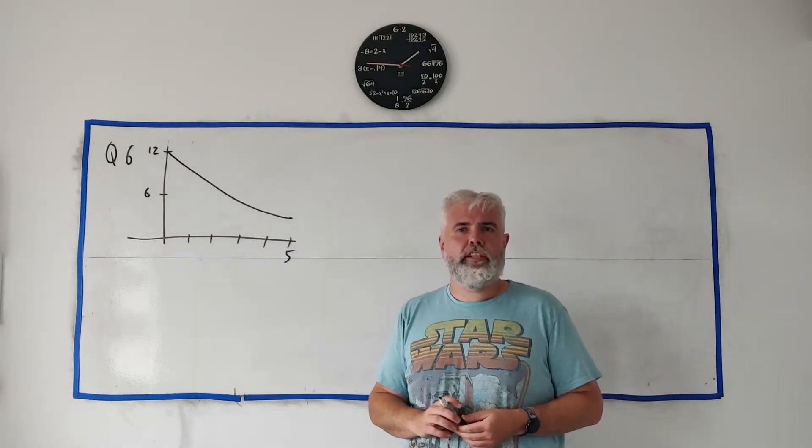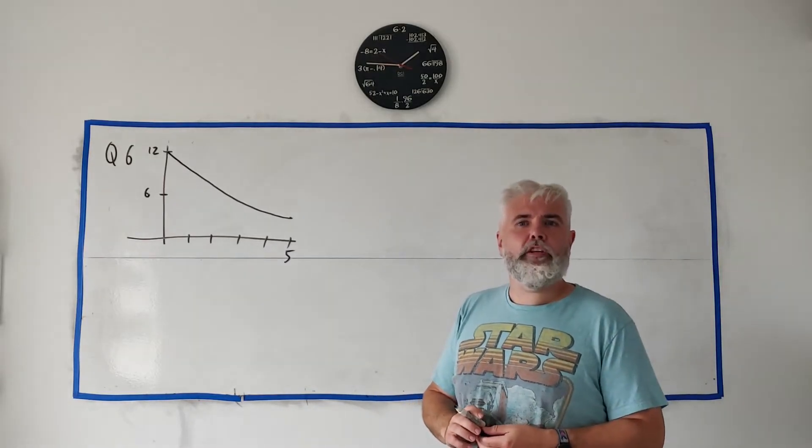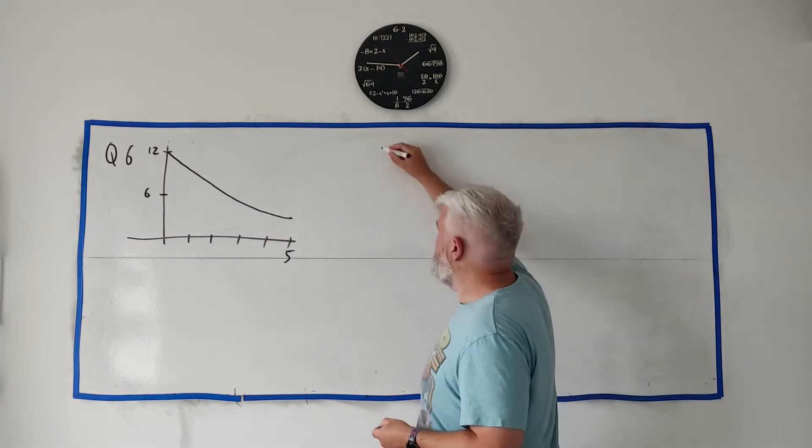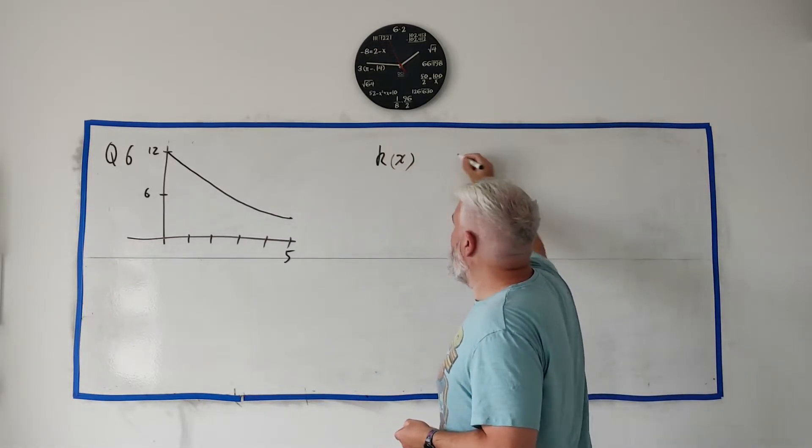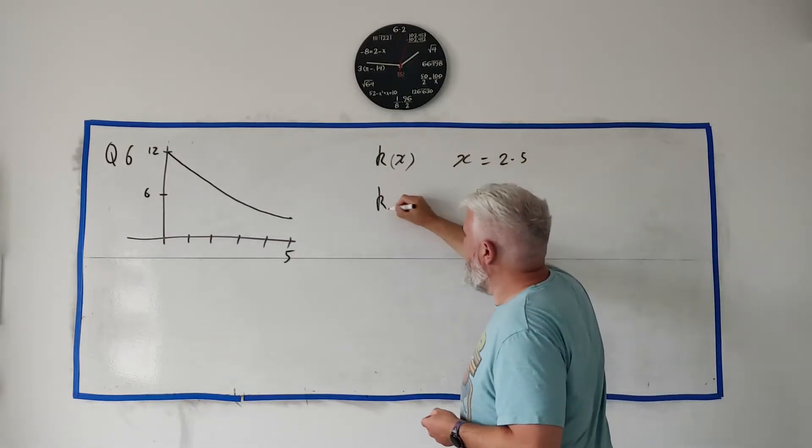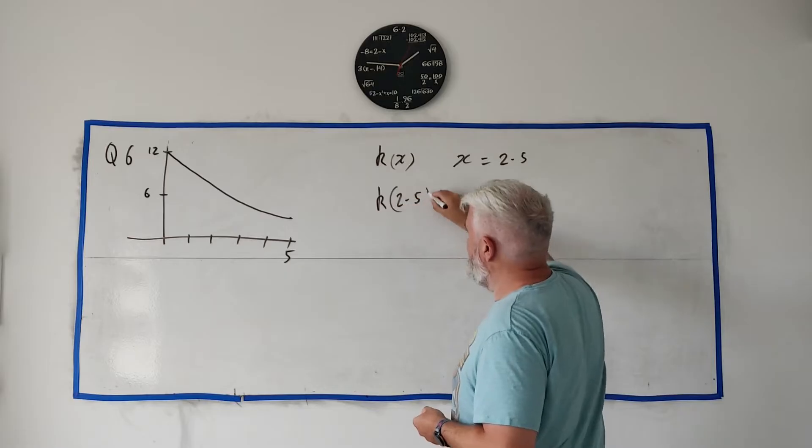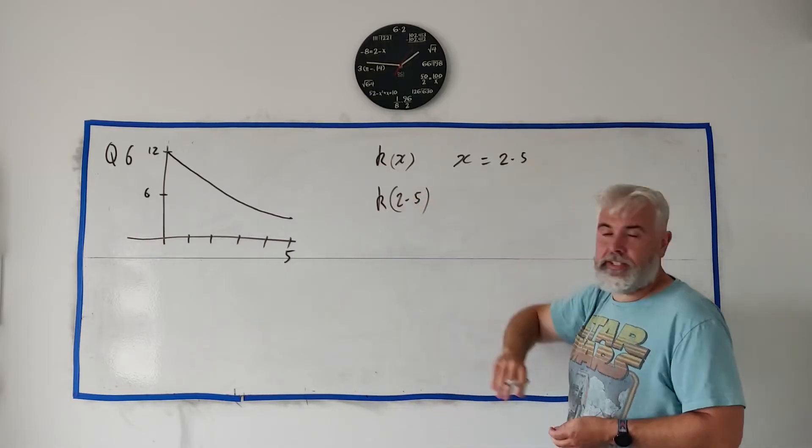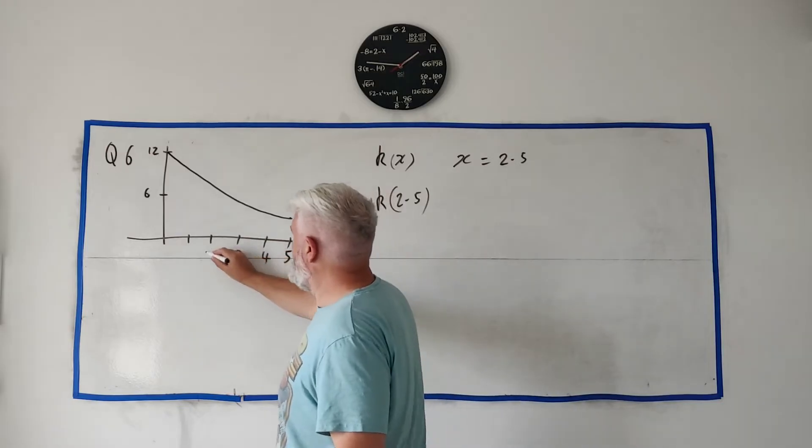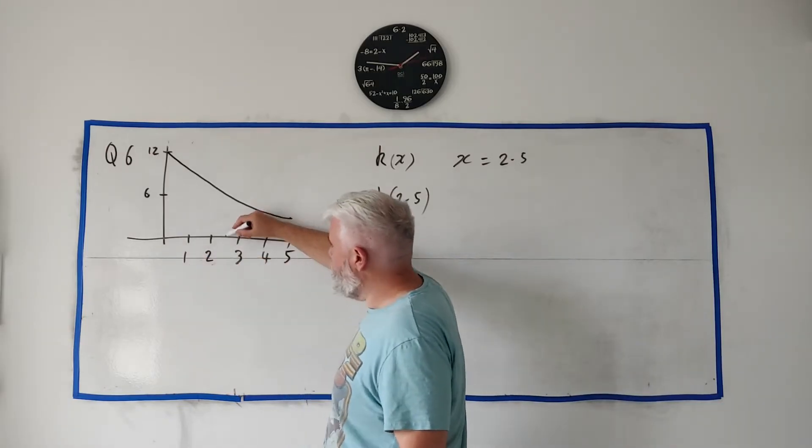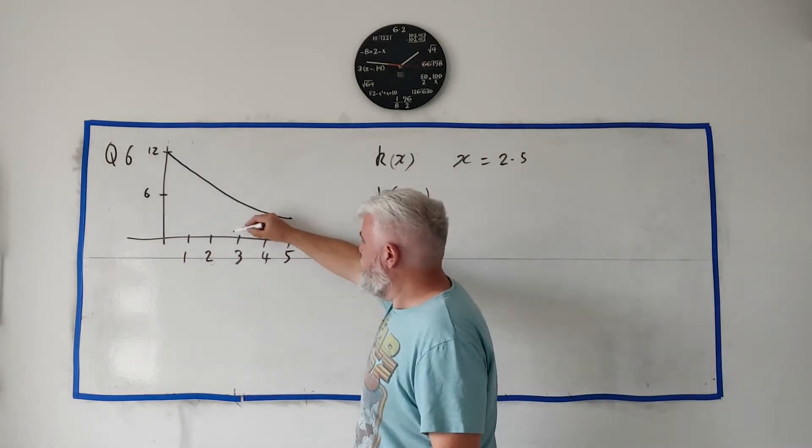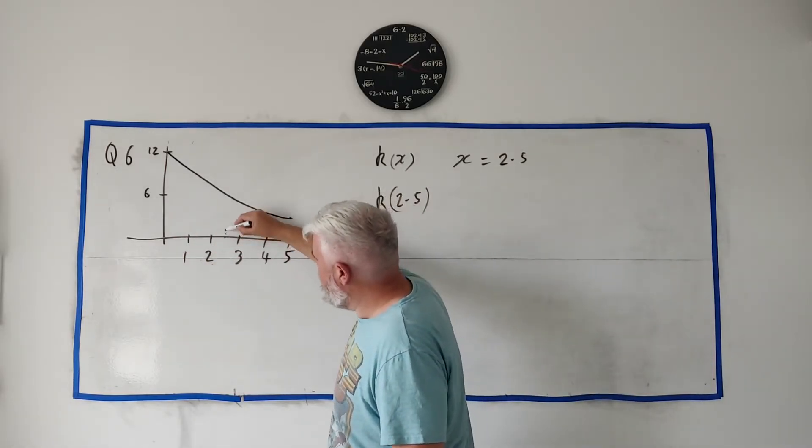So the first question: they ask you to estimate the value of k(x) when x is 2.5. So k(x) when x equals 2.5, what is k? Simply to do that, let's fill in some more numbers here.